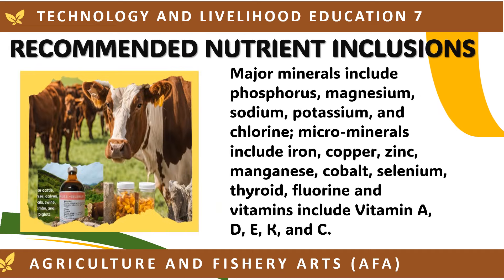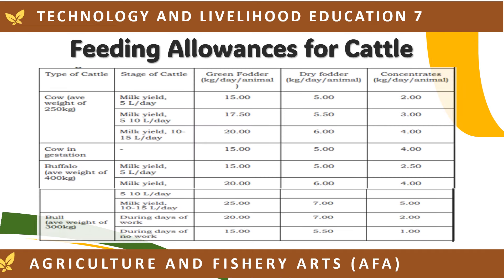The recommended nutrient inclusions for cattle include major minerals such as phosphorus, magnesium, sodium, potassium, and chlorine. Microminerals include iron, copper, zinc, manganese, cobalt, selenium, thyroid, and fluorine. Vitamins include Vitamin A, D, E, K, and C. The table below shows the feeding allowances for cattle.